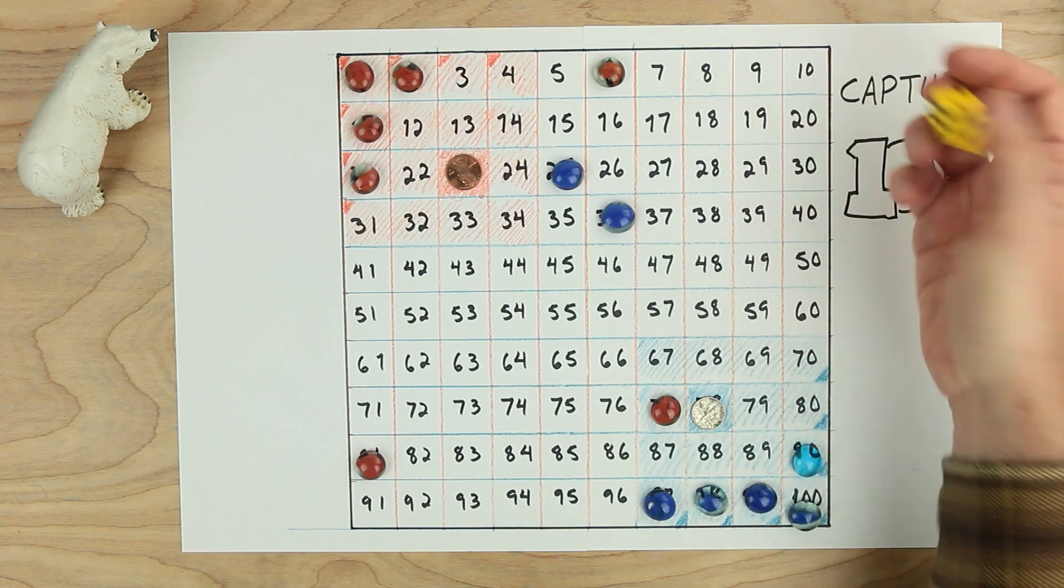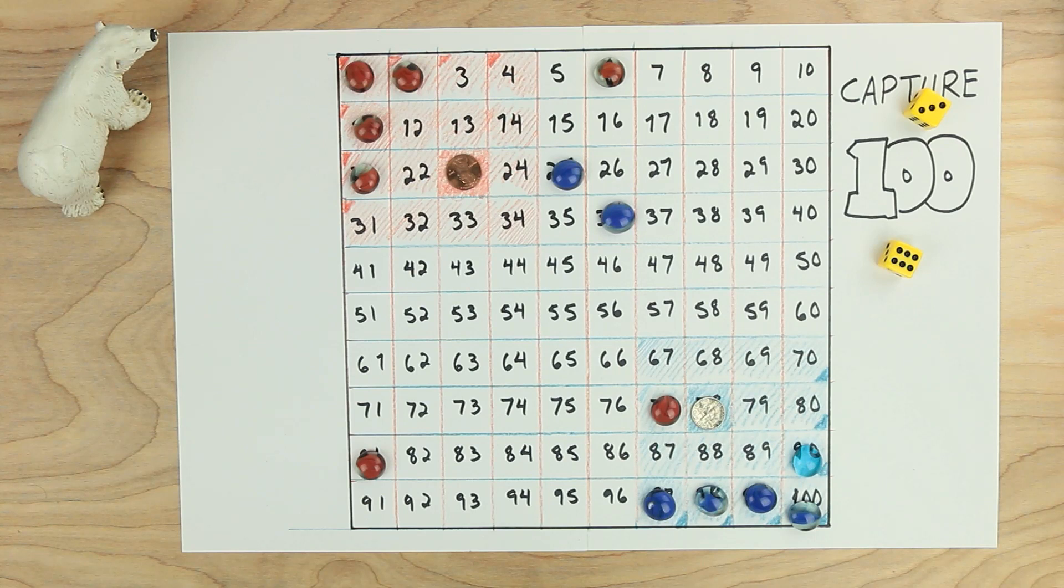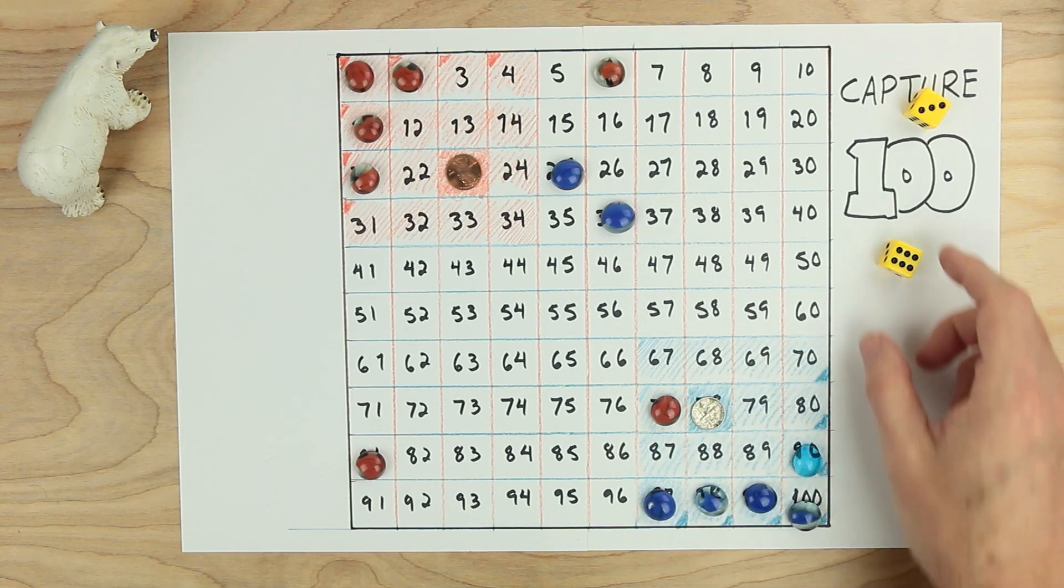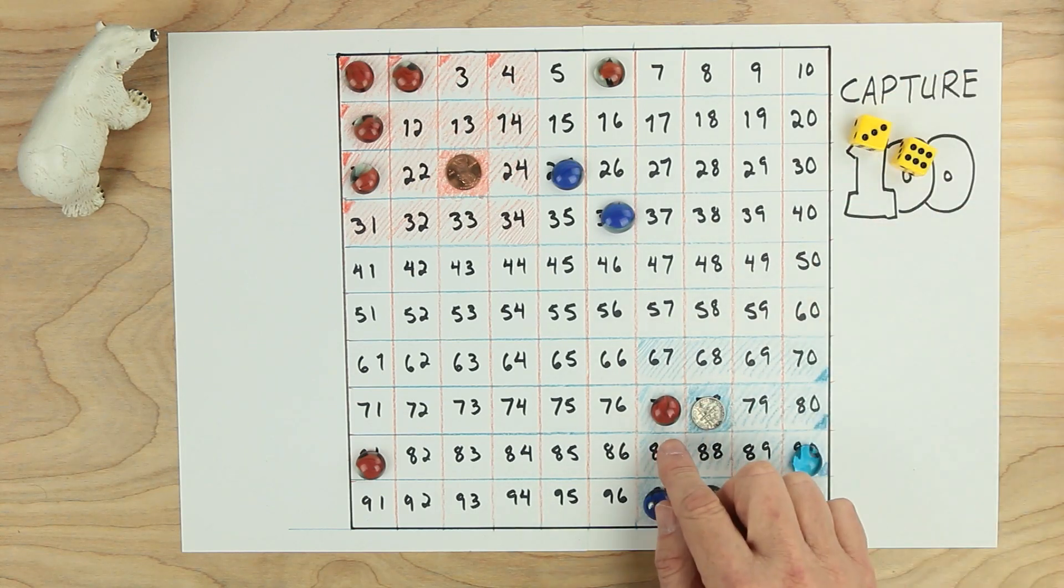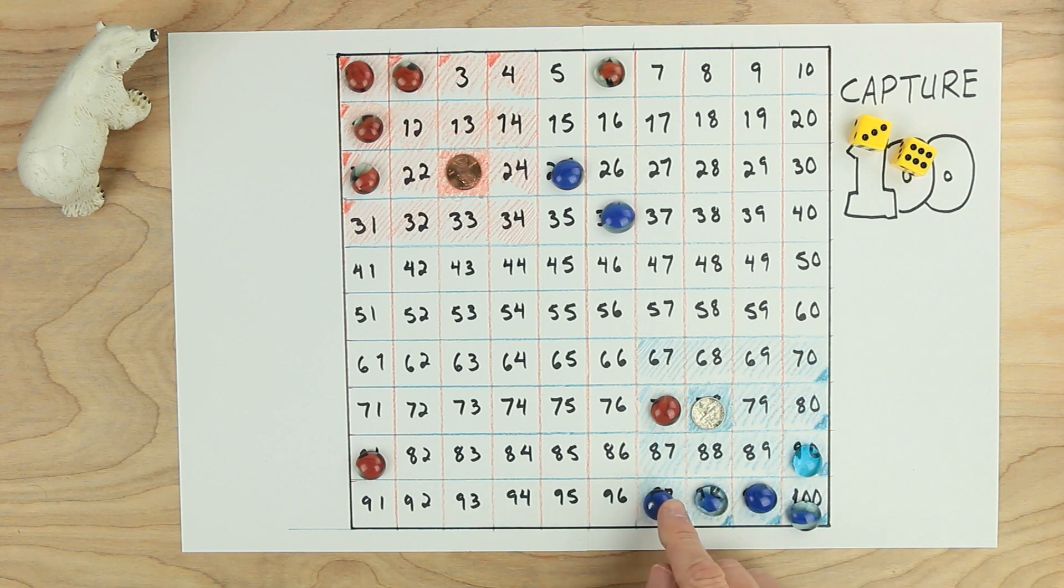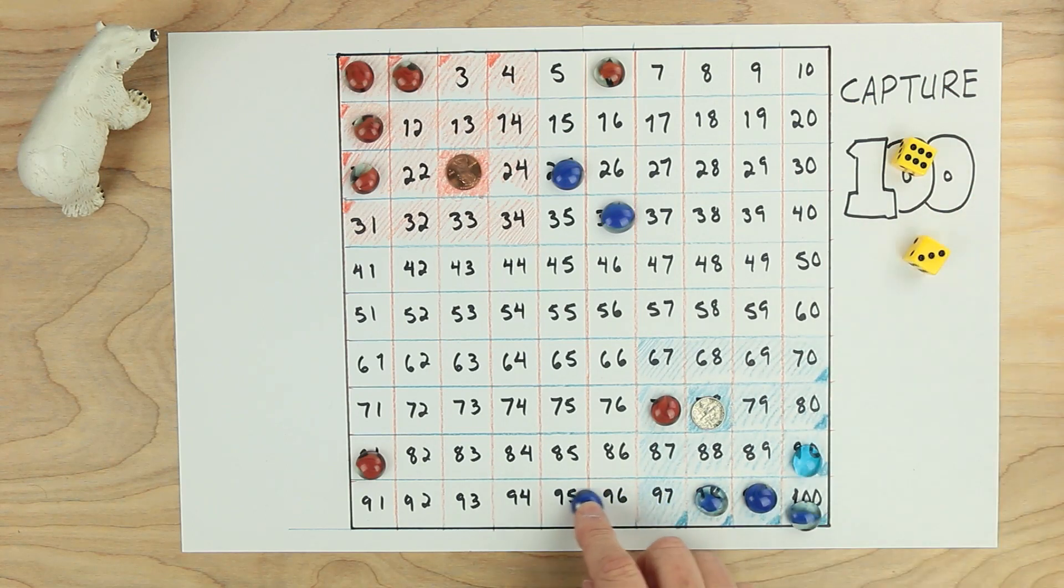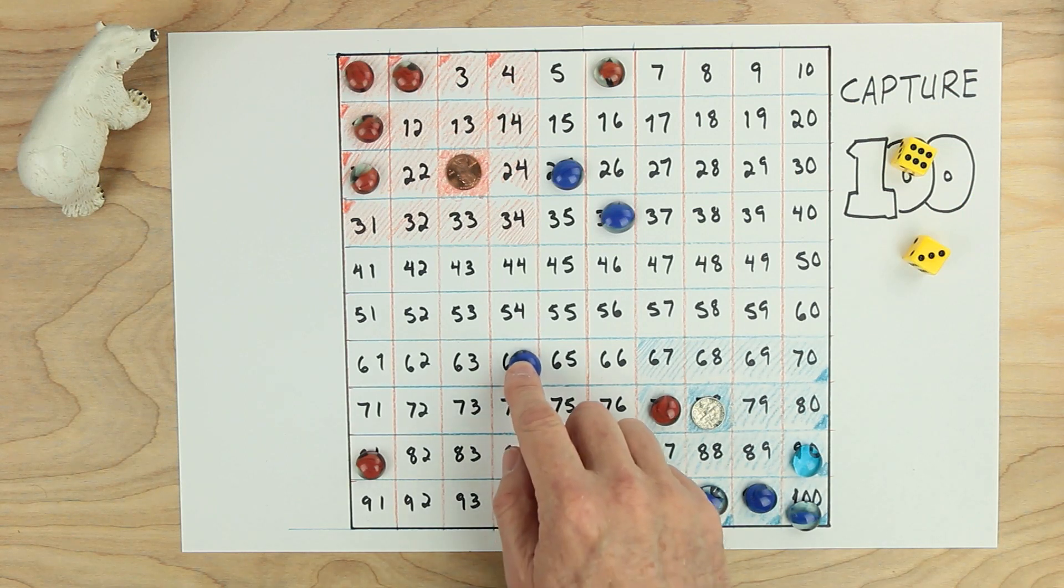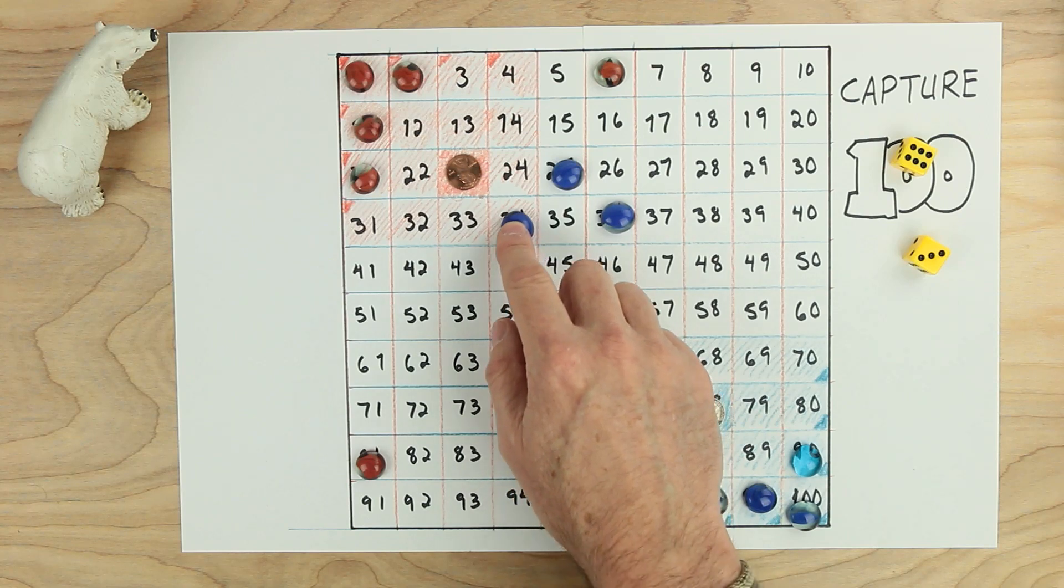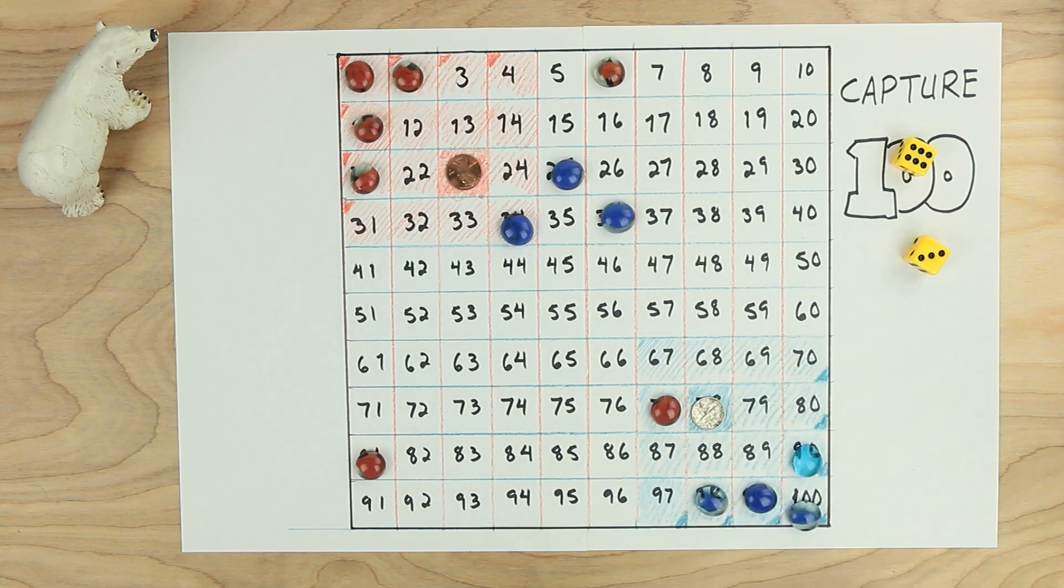Blue's turn. Blue rolls a three and a six. Neither of these numbers are going to get rid of this piece yet, but blue's going to make an attack of its own. Minus three tens, I'm sorry, minus three ones. Minus one, minus two, minus three. And then minus six tens, minus ten, minus twenty, minus thirty, minus forty, minus fifty, minus sixty. This is looking good for blue.